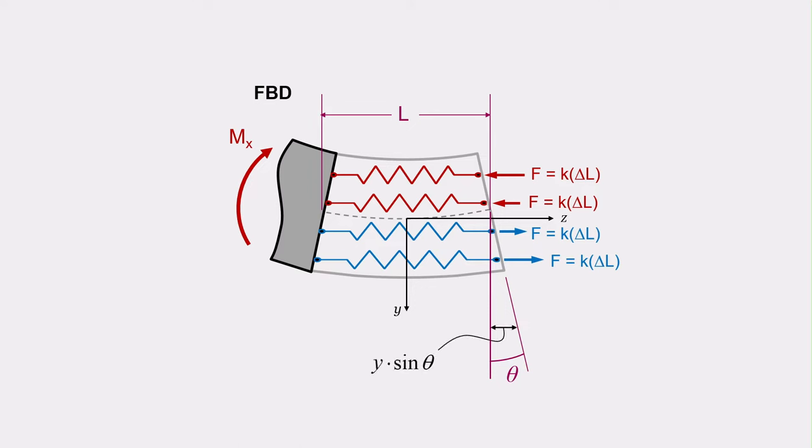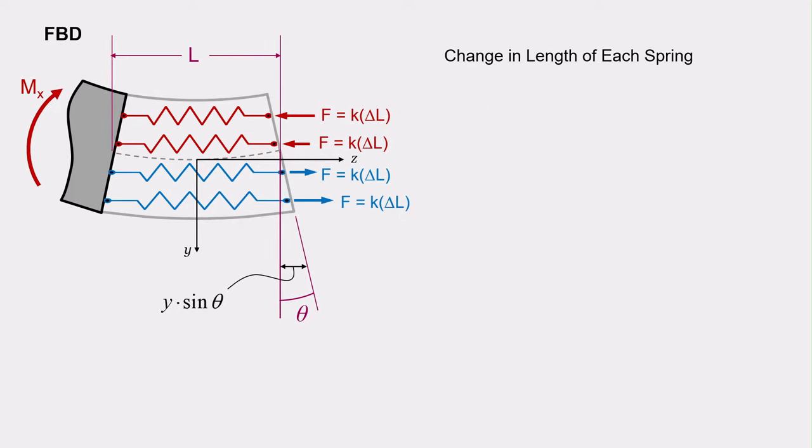Each side of the spring translates a distance of y times sine theta. As both sides of the spring translate, the total change in length of each spring is twice this value, or 2y times sine theta. We can check that this result makes sense by noting that when y is negative, then delta L will be negative, indicating that the springs will be in compression. And indeed, in our model, we see that we are expecting the springs to be in compression in the upper half of the beam where y is negative.